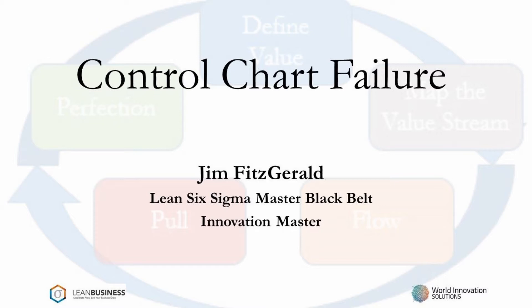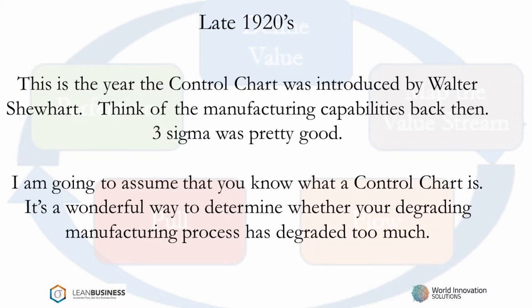Control charts were the bedrock of improving statistical process control. They were invented by Walter Shewhart, a master statistician, during the first part of the last century. Walter Shewhart introduced control charts in the 1920s — that was nearly 100 years ago.